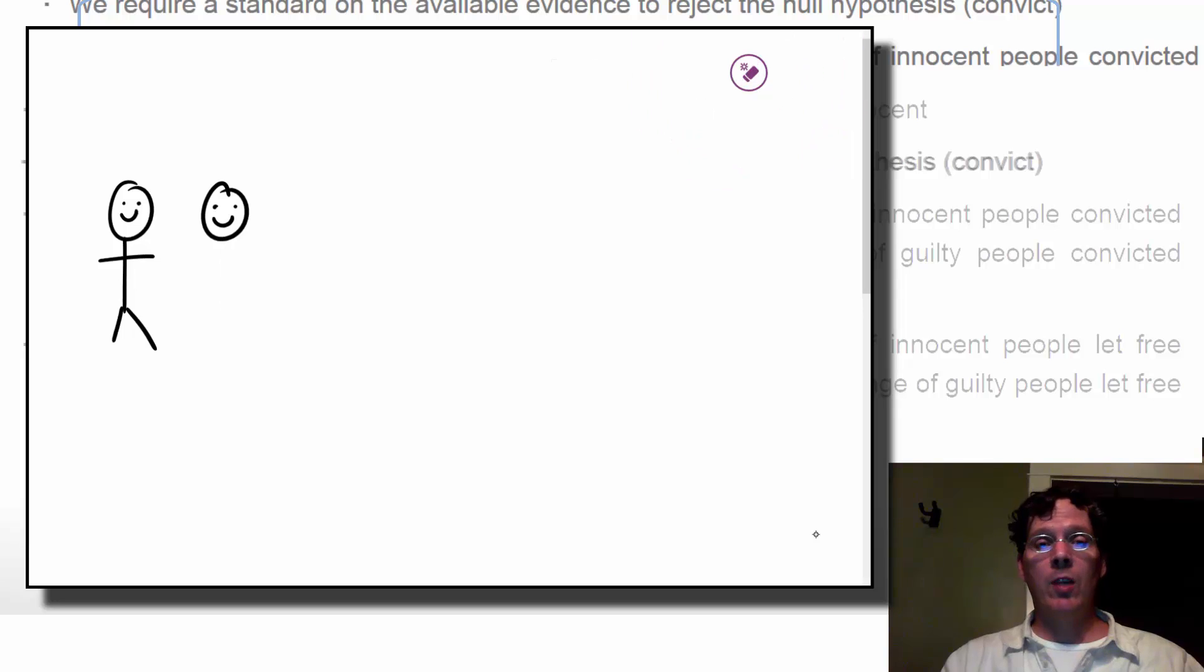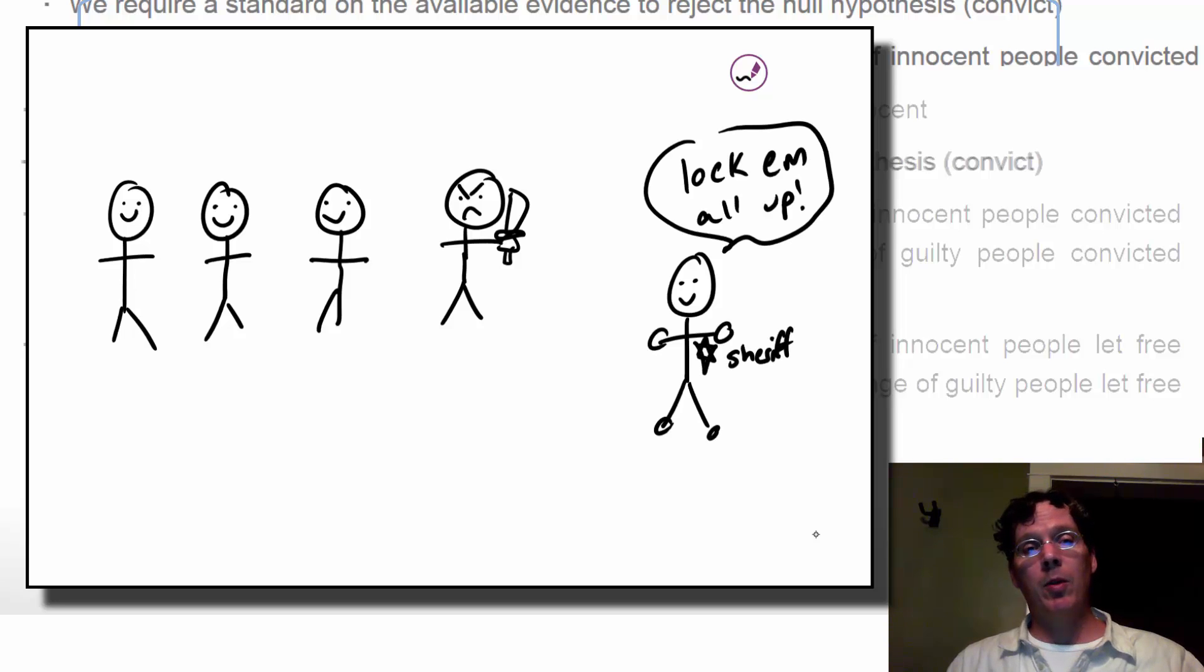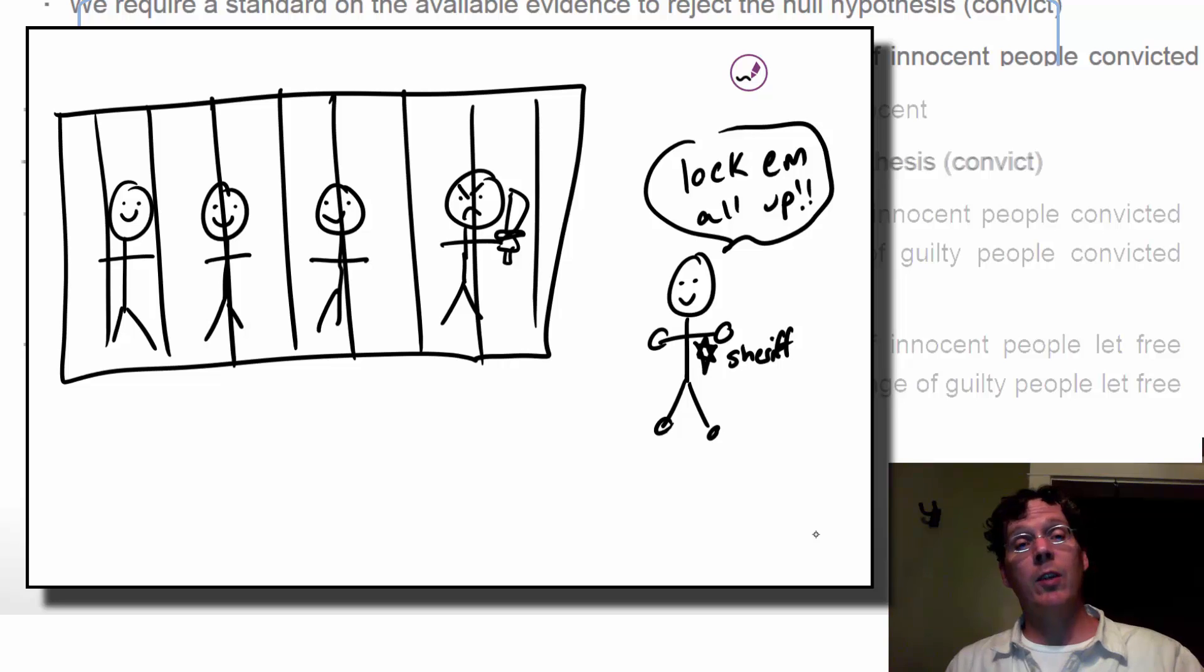We require evidence and a standard on that evidence to reject the null hypothesis. If we set a very low standard—that is, we don't require much evidence to convict people—then we increase the percentage of innocent people convicted (Type I errors). However, we would also increase the percentage of guilty people convicted, which would be correctly rejecting the null hypothesis.